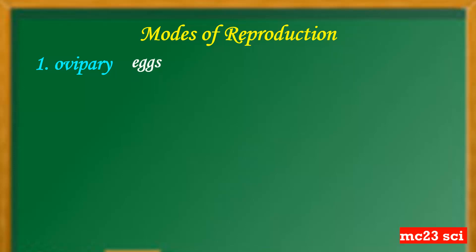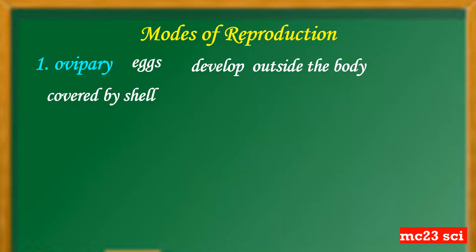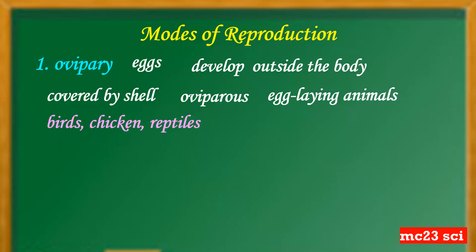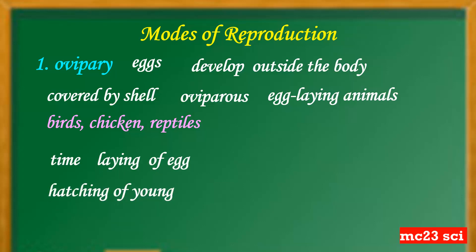The modes of reproduction: number one is oviparous. In oviparous animals, the eggs develop outside the body of the female animal and the eggs are covered by a shell. These animals are called oviparous or egg-laying animals, like birds, chickens, and reptiles. The time period between the laying of eggs and the hatching of the young ones is called the incubation period.